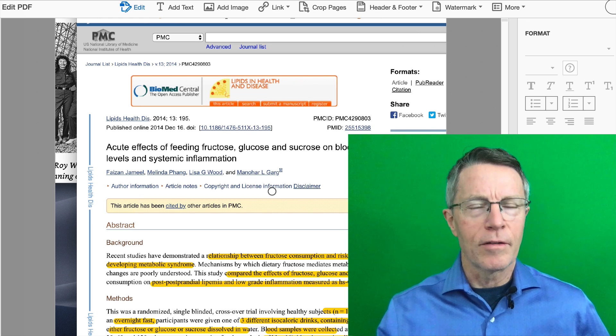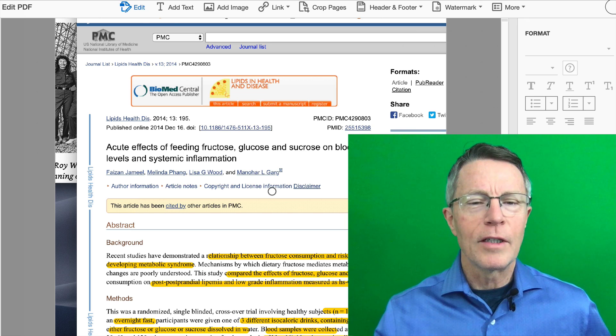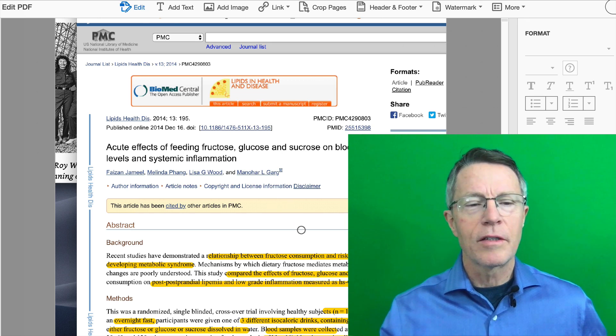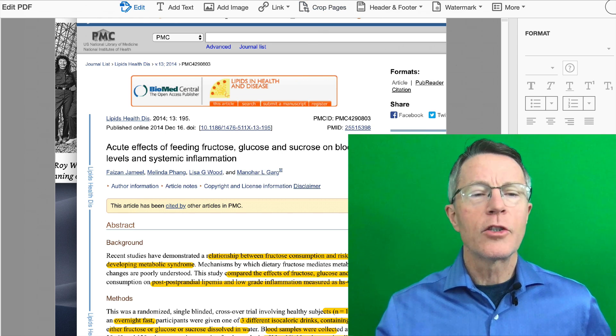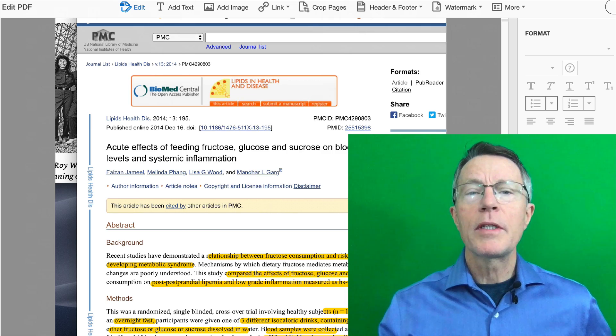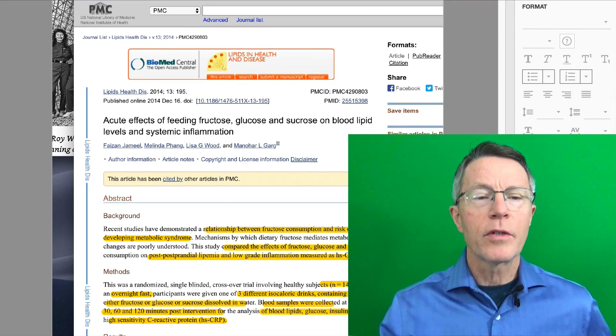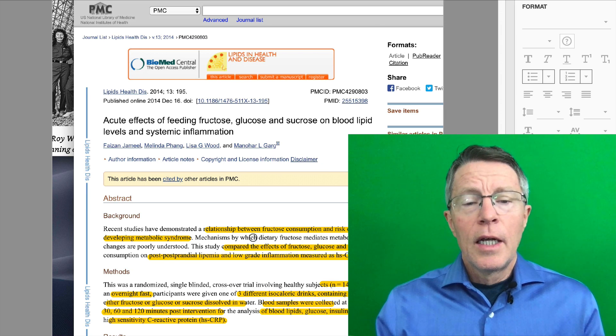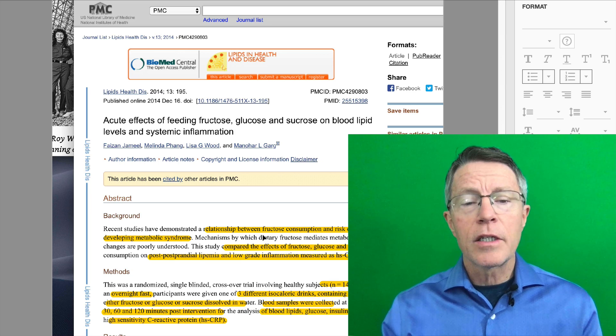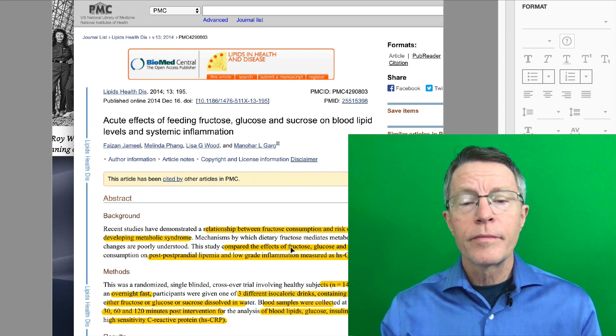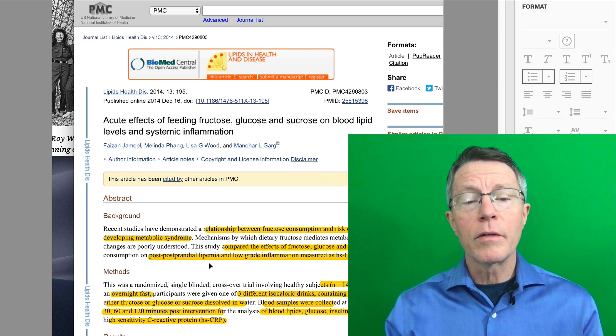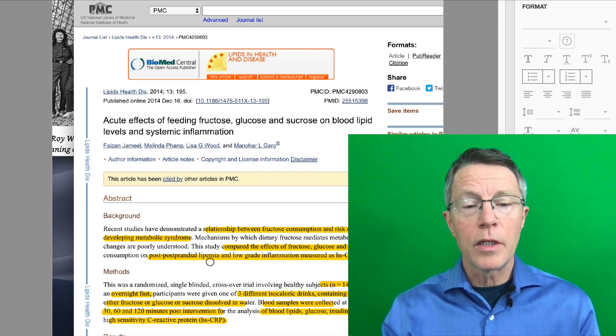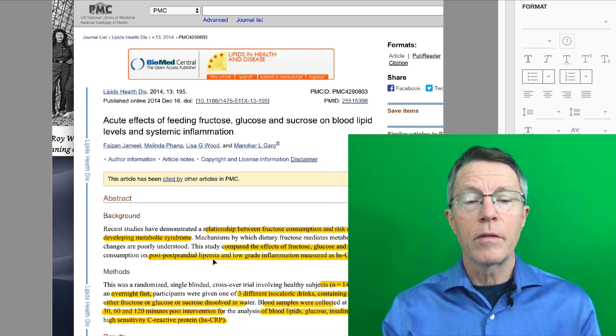So let's get a little bit deeper into the article and find out really what this is saying about fructose. It was in the journal Lipids in Health and Disease. It was published in 2014 and it's acute effects of feeding fructose, glucose, and sucrose on blood lipid levels. Now what they're doing is comparing fructose to glucose and sucrose. They're looking at postprandial impact, lipemia, impacts of cholesterol and blood, lipo meaning cholesterol and the other blood fats, and low-grade inflammation, HSCRP.